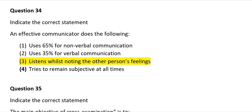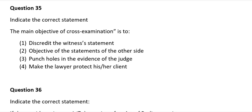Question 35: Indicate the correct statement. The main object of cross-examination is to: 1) Discredit the witness statement; 2) Object to the statement of the other side; 3) Punch holes in the evidence of the judge; 4) Make the lawyer protect his or her client. The correct answer is number 1: discredit the witness statement.